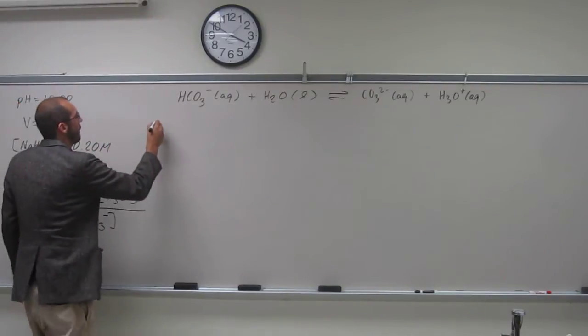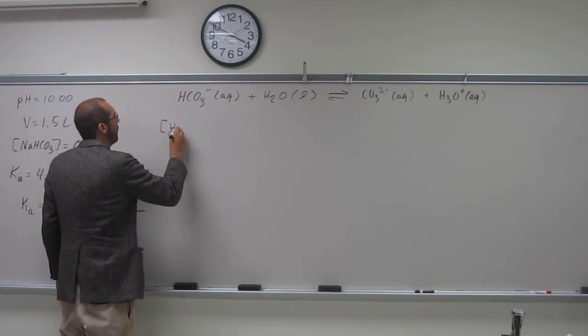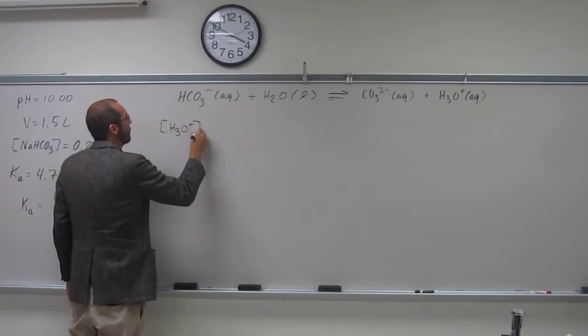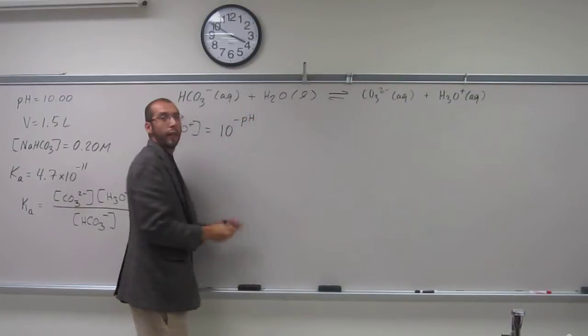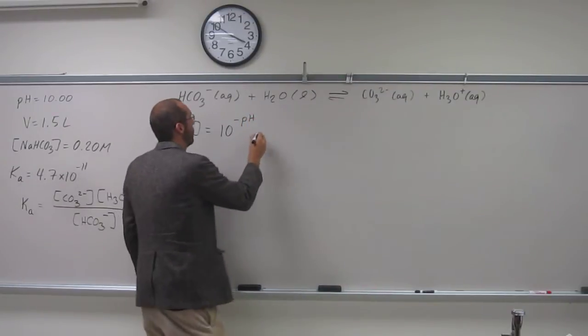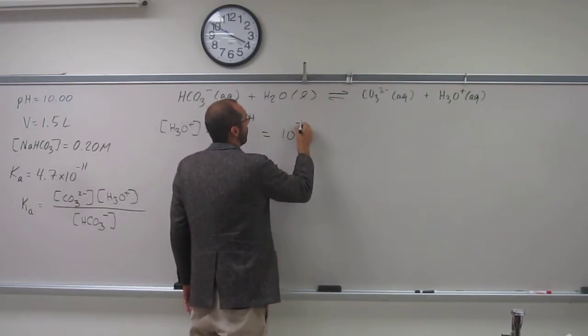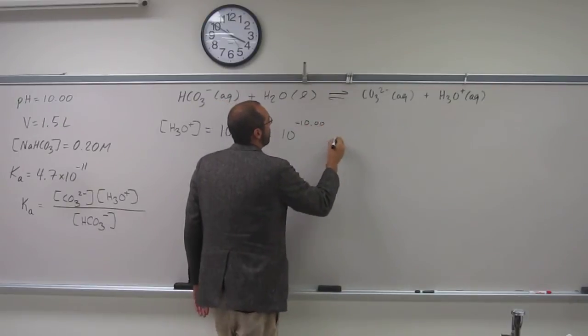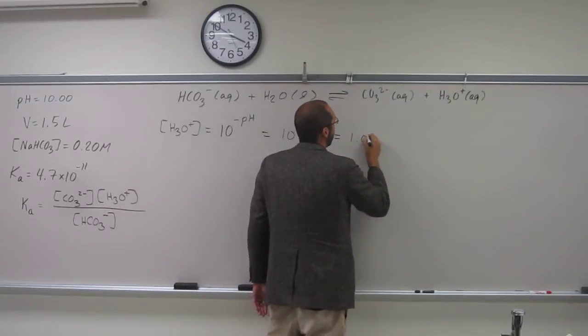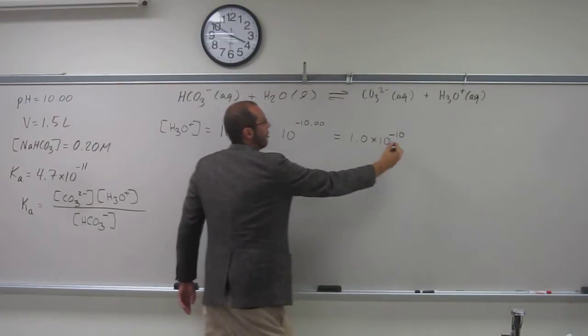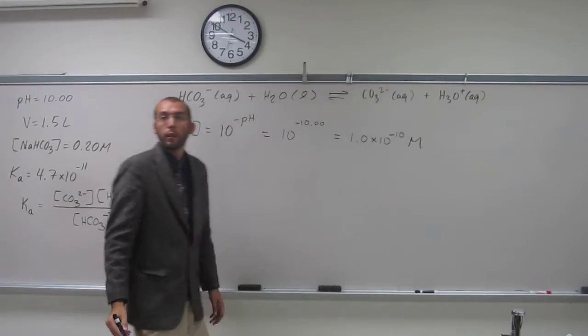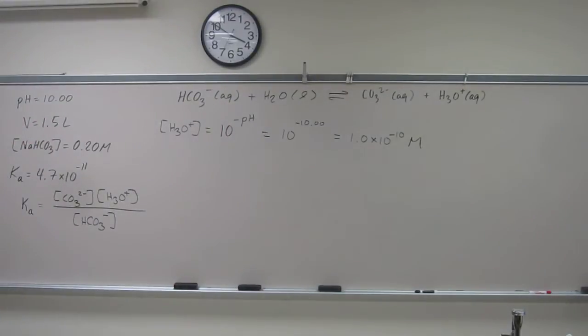So let's do that. The H3O plus concentration is going to equal 10 to the negative pH, so 10 to the negative 10.00, which is 1.0 times 10 to the negative 10 molar.